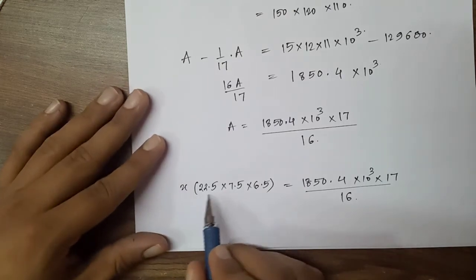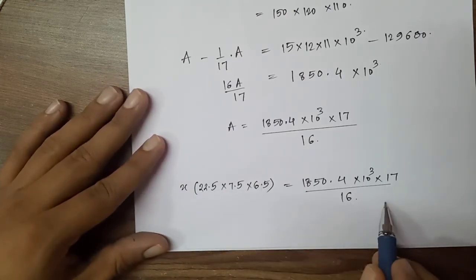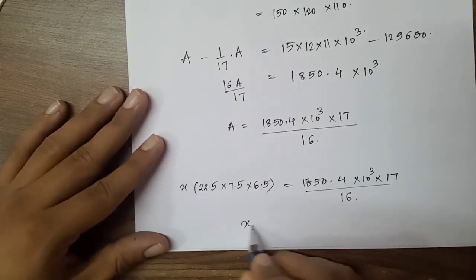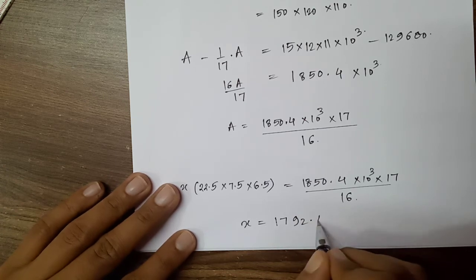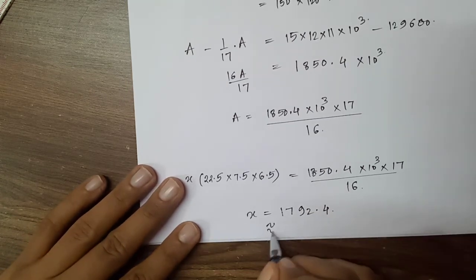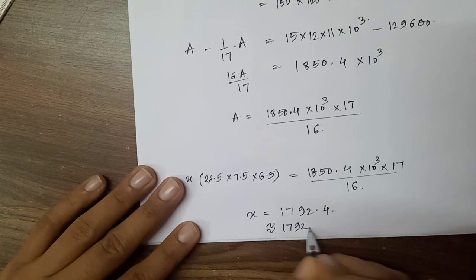And here you can shift these three terms, and if you calculate you will get the number of bricks as 1792.4. If you round off, it is 1792 bricks.